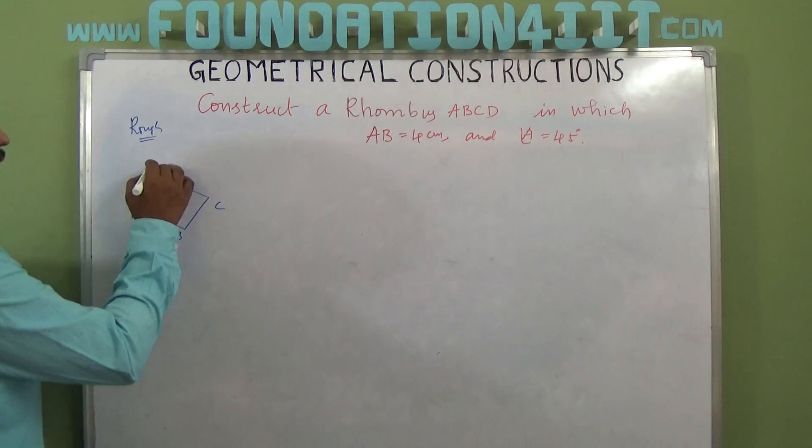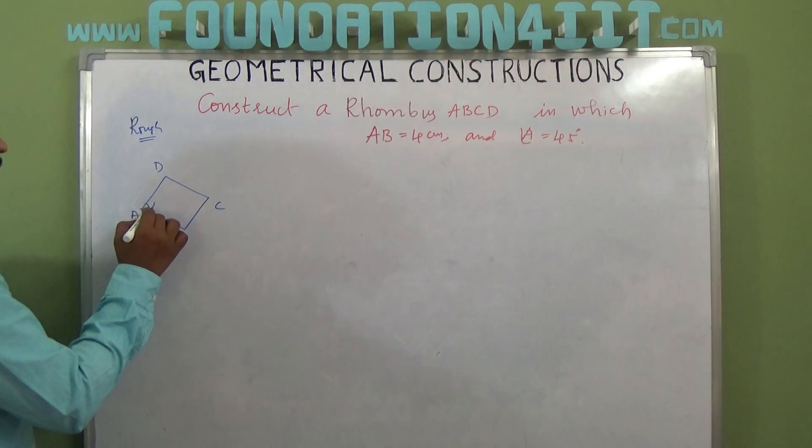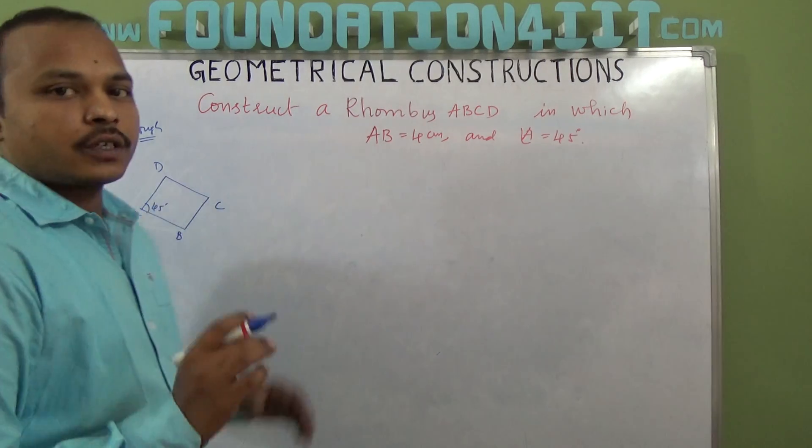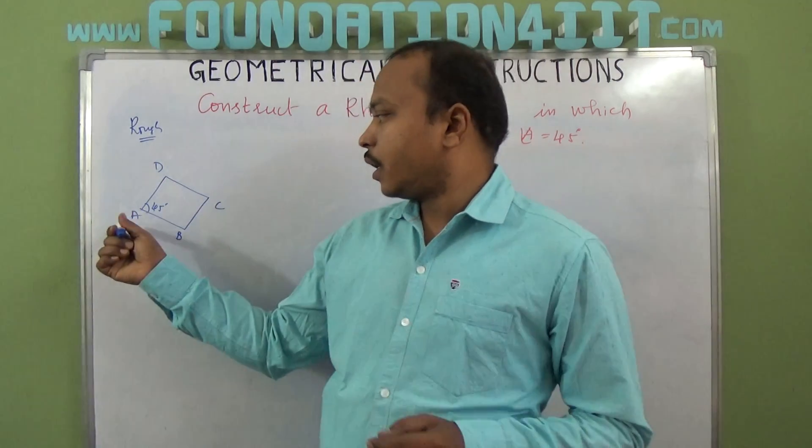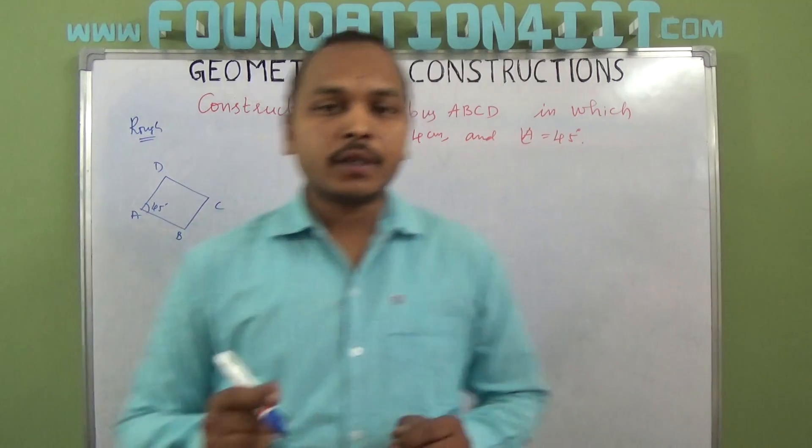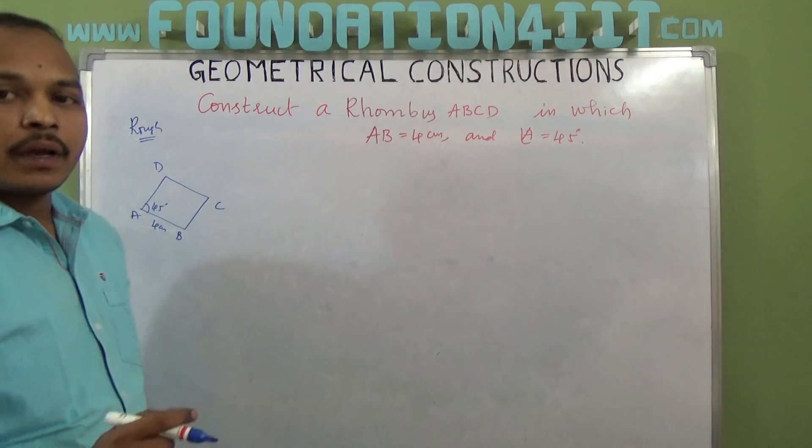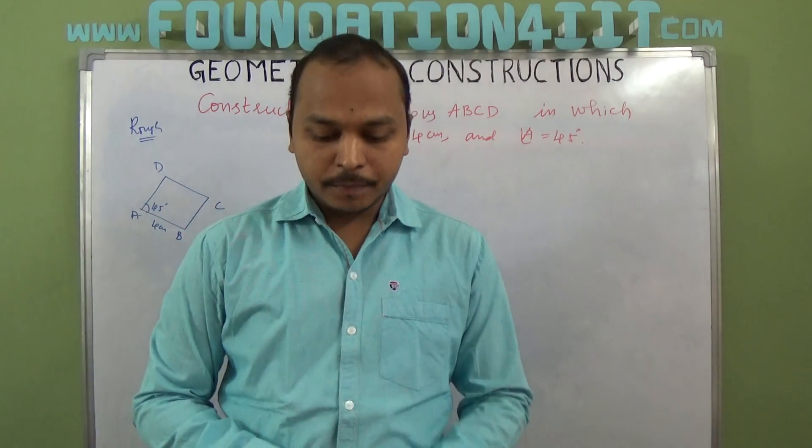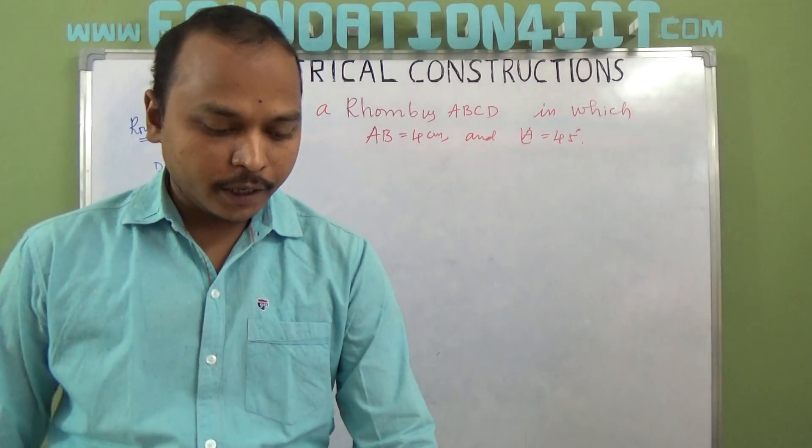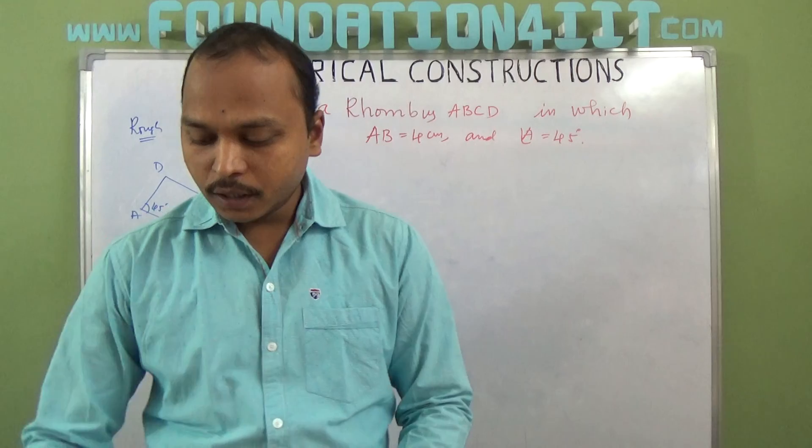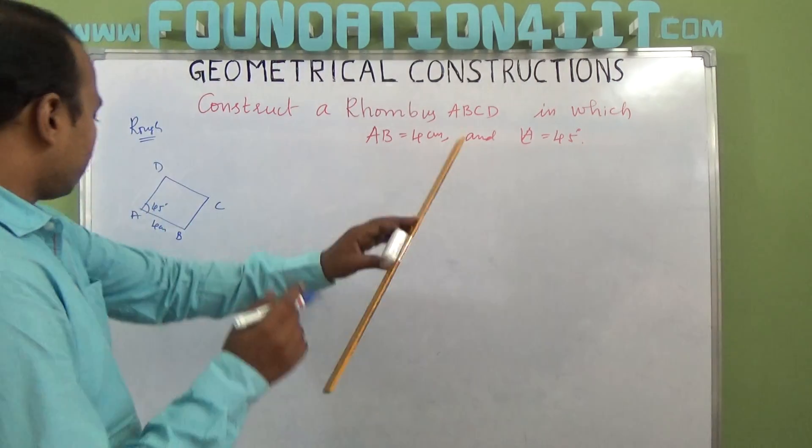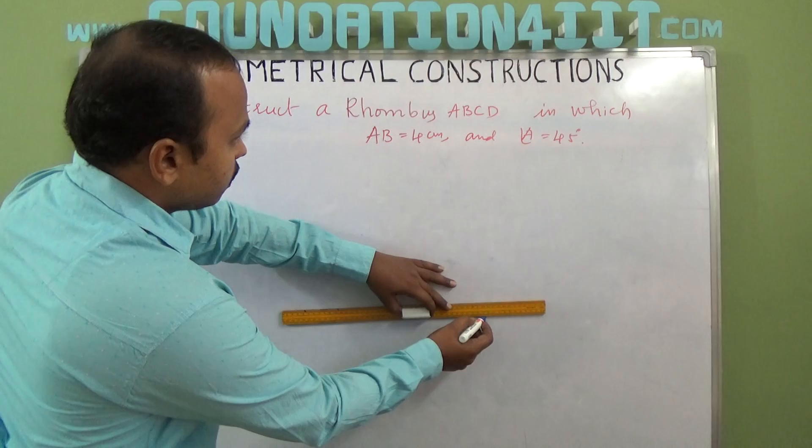ABCD, so angle is 45 degrees. Just take a rough diagram. AB is given as 4 centimeters, so we'll draw a 4-centimeter line segment first. Angle A is 45 degrees, so observe the rough diagram. According to the given data, first we will draw line segment AB, that is 4 centimeters.